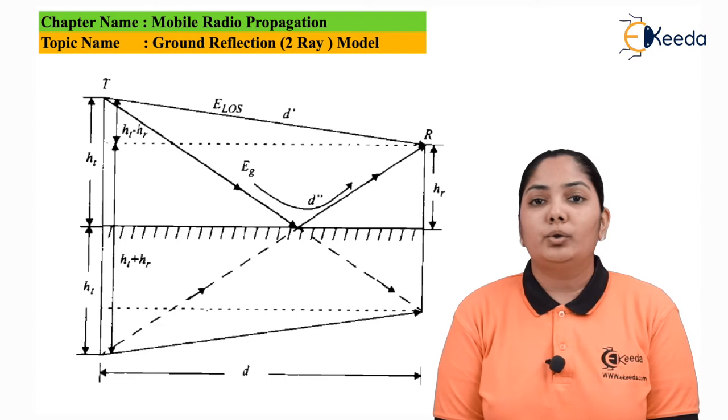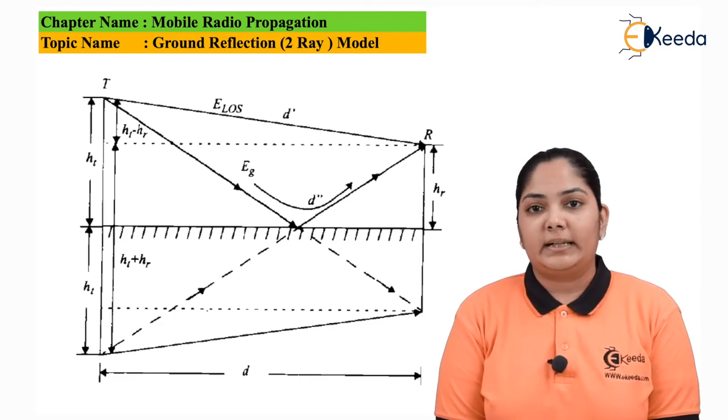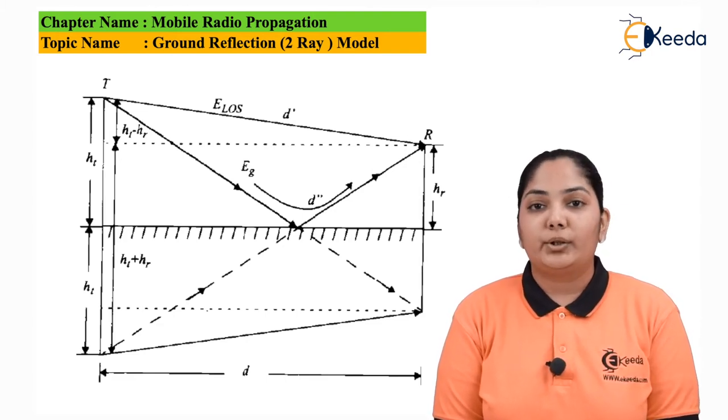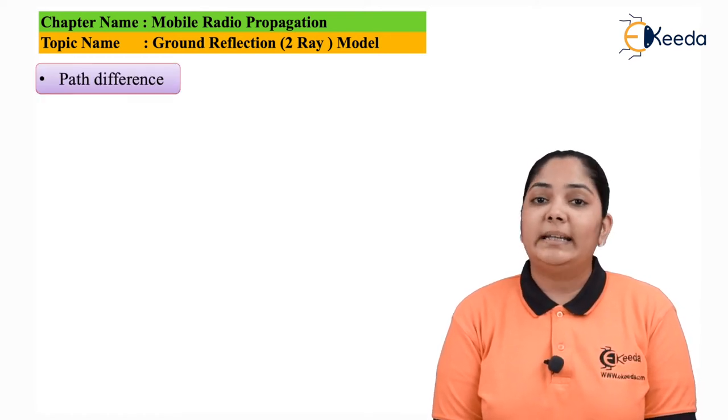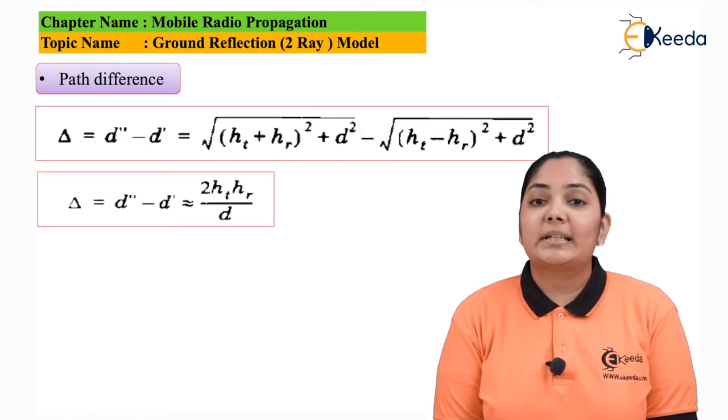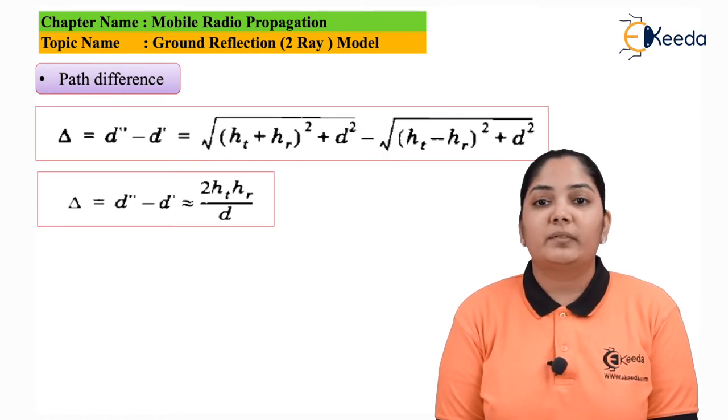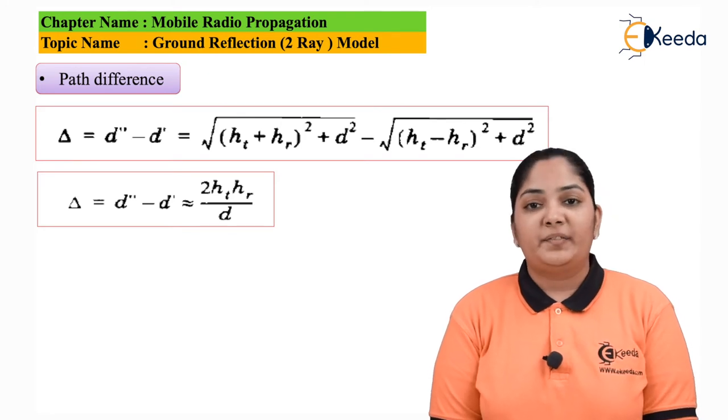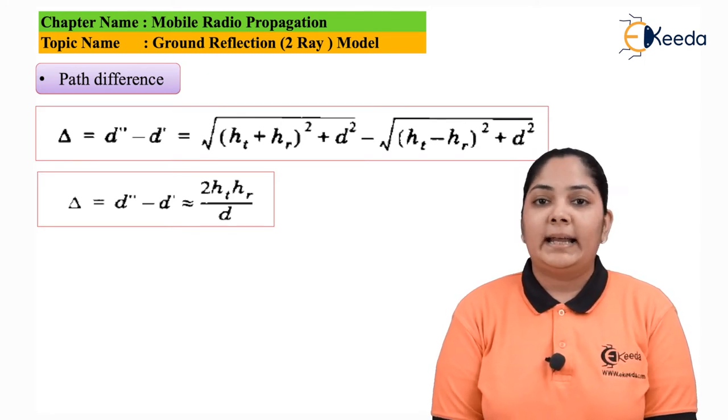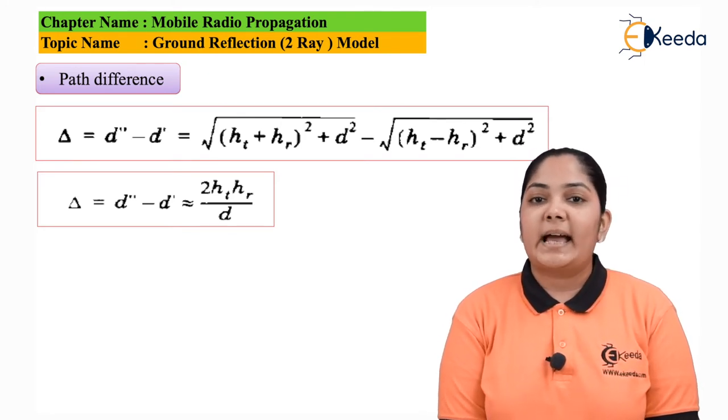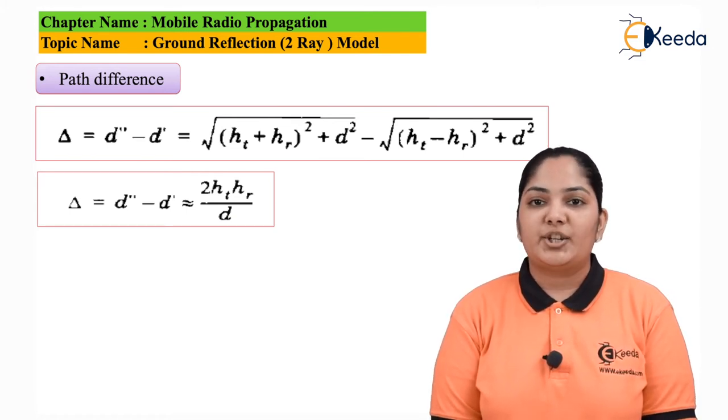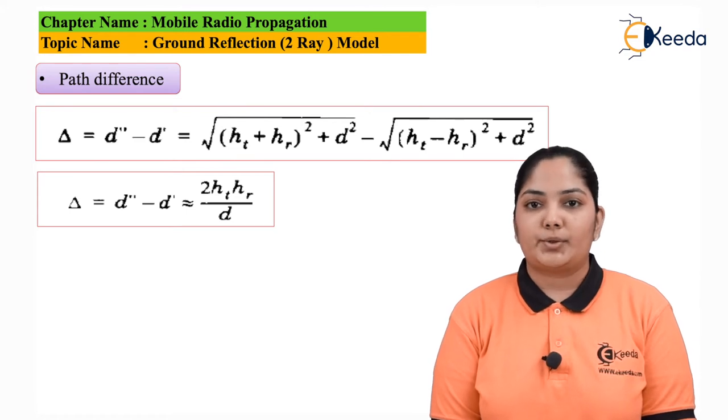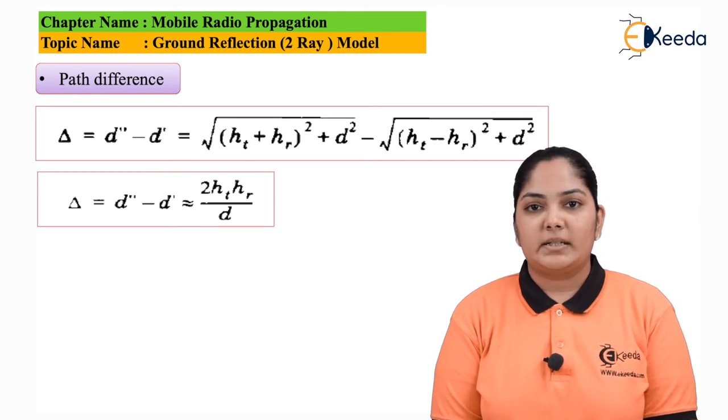If I want to know what is the exact value of the received signal that I am getting, I will have to calculate that value. And how do we calculate? Remember we have two paths. The first one is the D prime path and the second one is a D double prime path through which the waveform is getting transmitted. The path difference is calculated as delta which is given as D double prime minus D prime which is equal to root of ht plus hr the whole square plus d square minus root of ht minus hr the whole square plus d square.